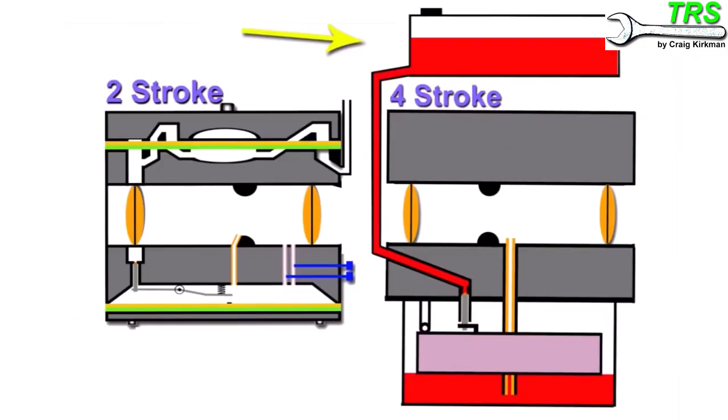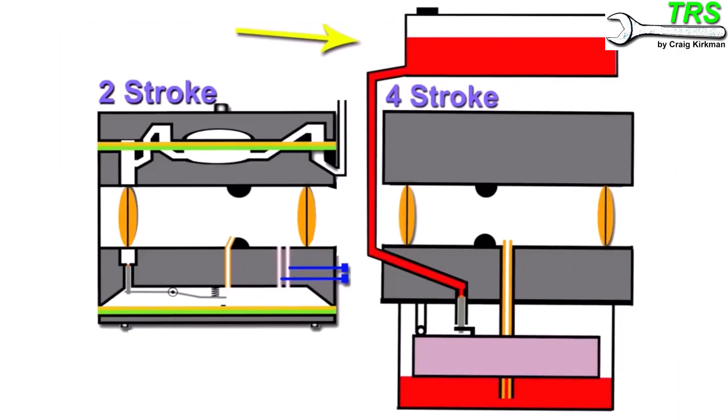And that, of course, means that we have to have a fuel tank that's positioned higher than the carburetor in order for it to feed the carb. But as we'll see, the two-stroke carburetor is very much different.